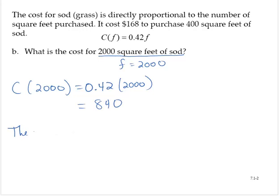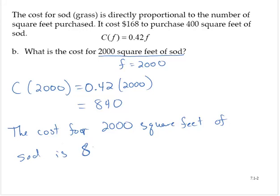Which is 840. So the cost for 2,000 square feet of sod is $840.